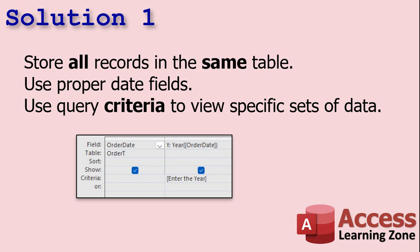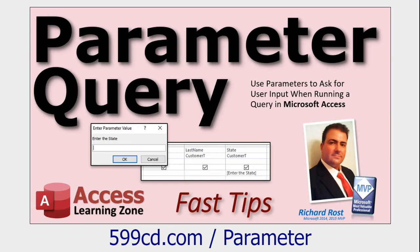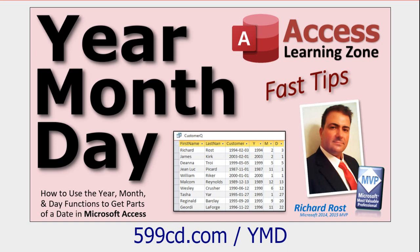To fix that, store all records in the same table — all your orders should be in one orders or sales table. Use proper date fields. I know people want to pull up all sales from 2020 by just opening that table, but what you're going to do is make a query and use proper criteria. Bring your order date in, set a value using the Year() function — that returns a number like 2020 or 2021. Put that in the criteria or use a parameter query. Then you can view any year you want — even 1994 — from one table.